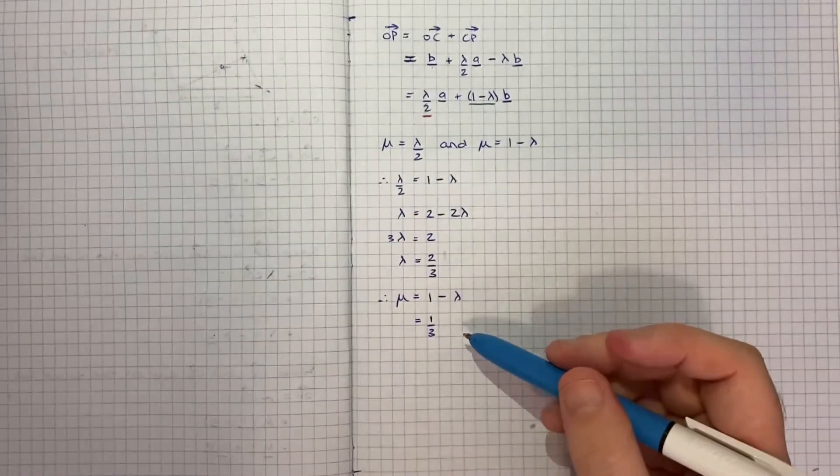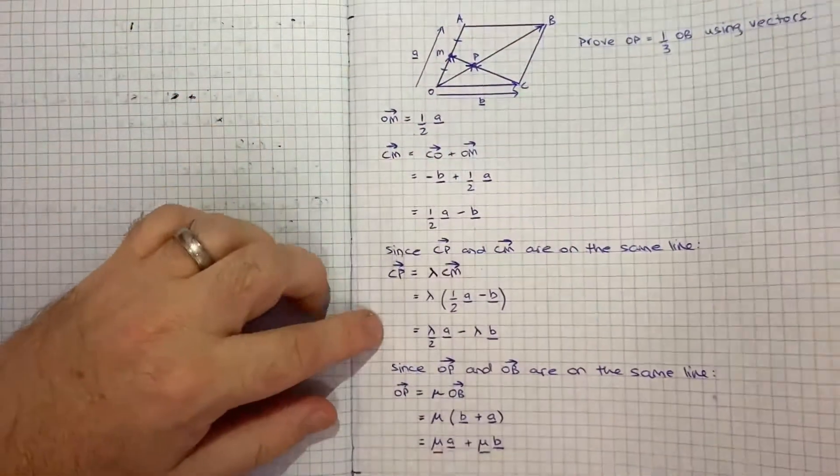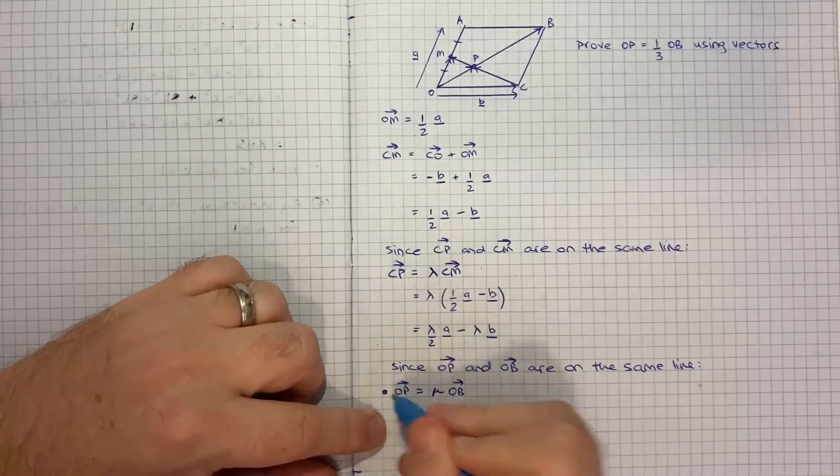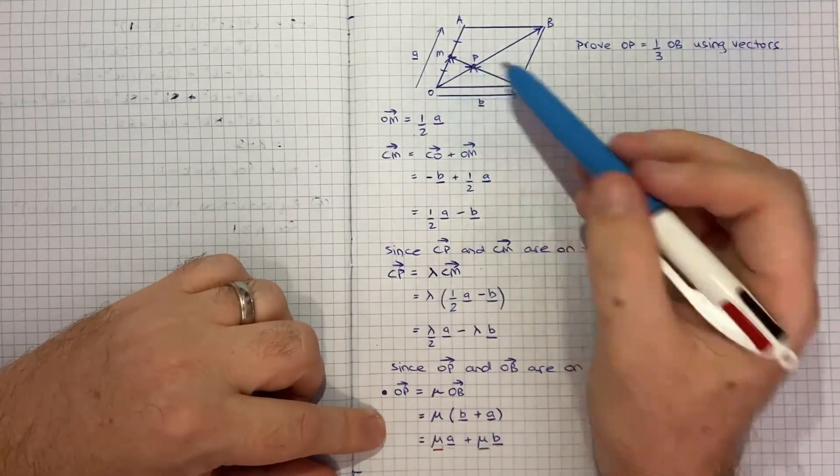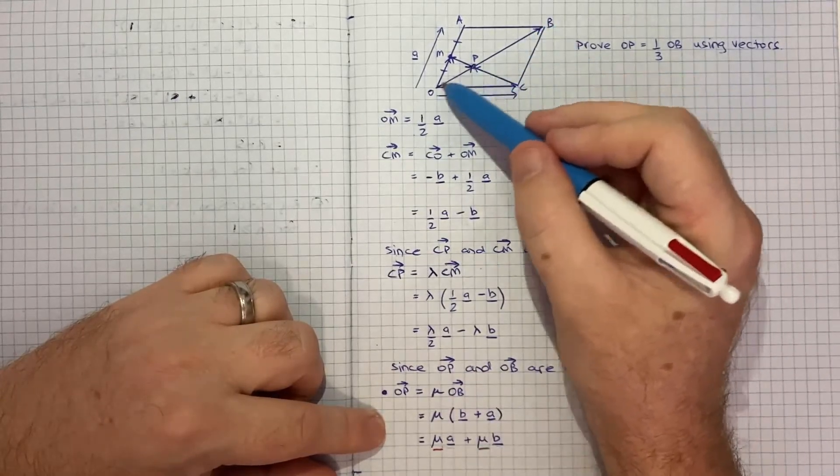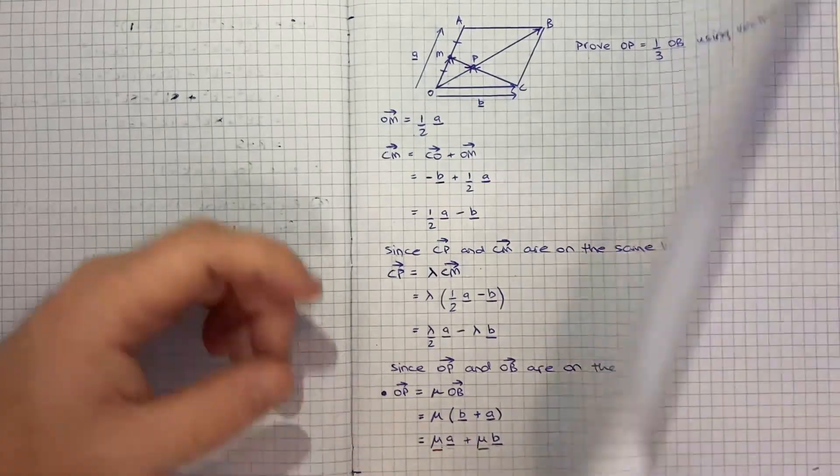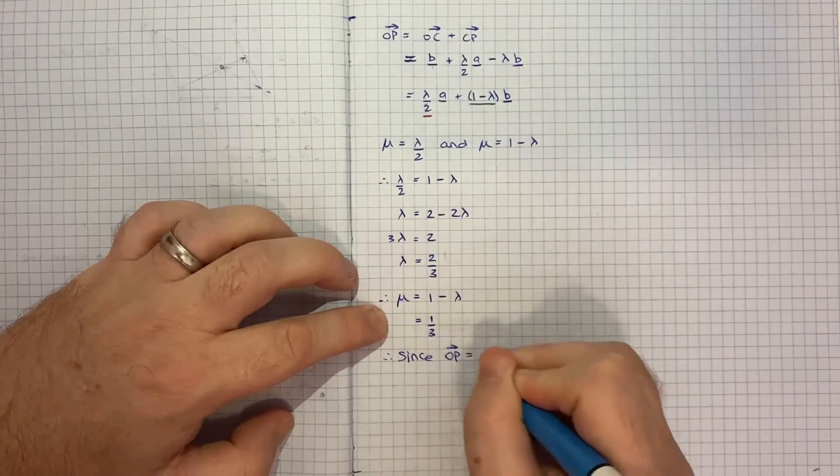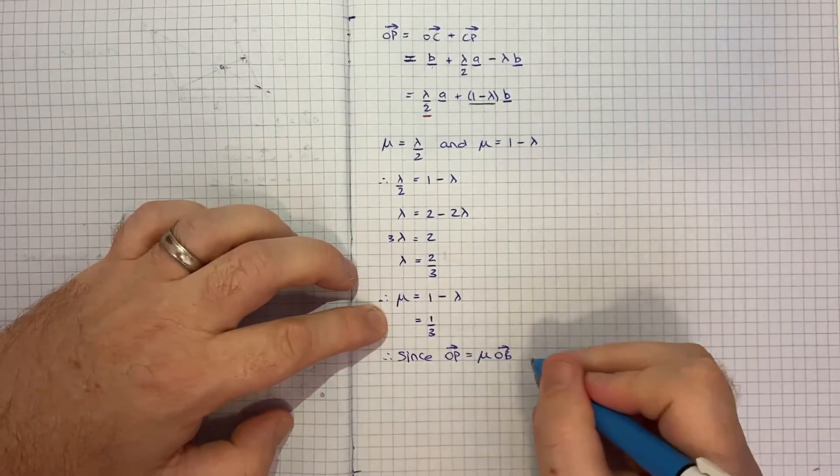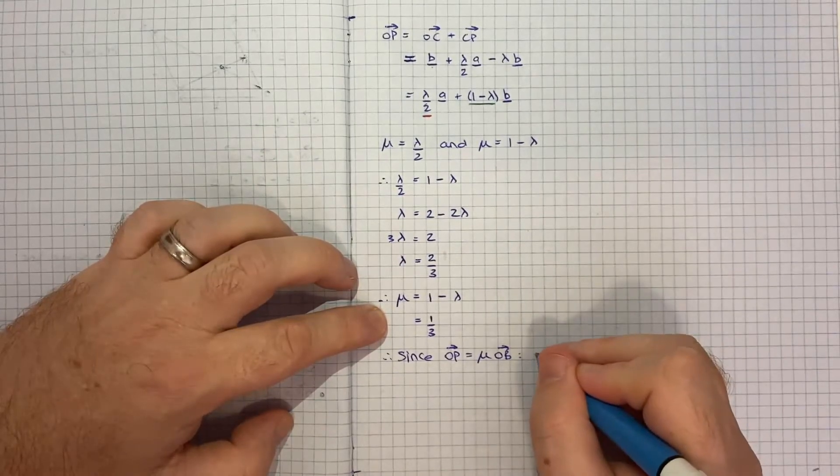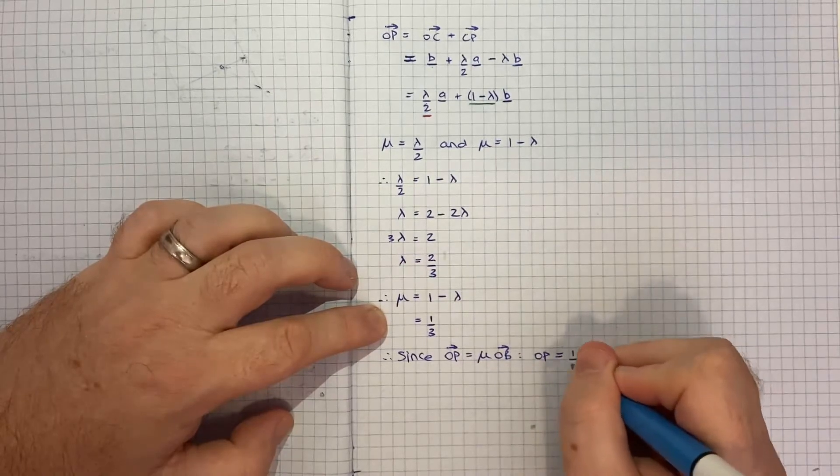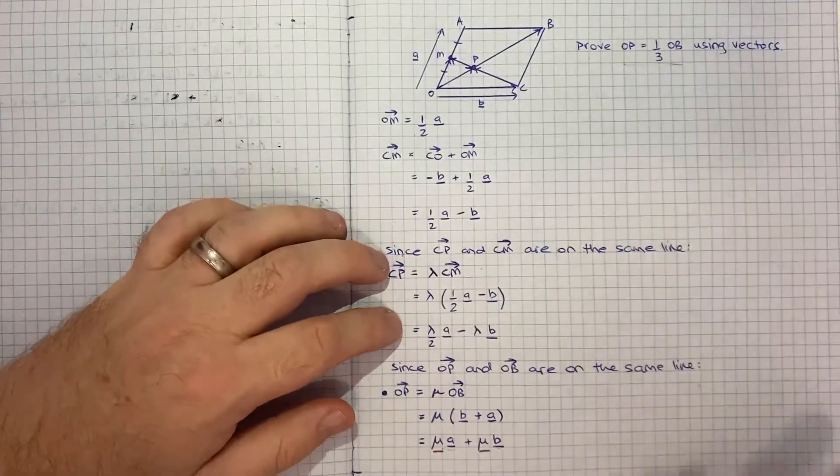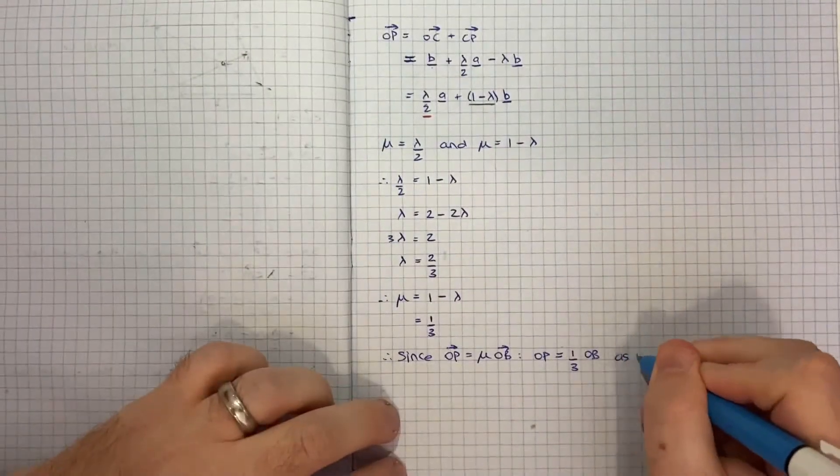Now, actually, that means most of our work is done because if we look back to this step here, we see that we deduced that OP was mu OB. So some fraction of it because they sit on the same line. We've just worked out that fraction. So therefore, since OP vector equals mu OB vector, we can say that the magnitude of OP is equal to mu, which we've said is 1 third, times OB. And that is what we were being asked to show. So using vectors, we've just shown the result.